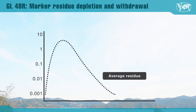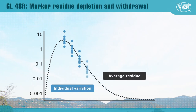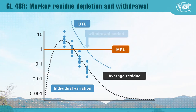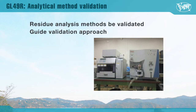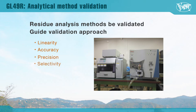This is an example of how the data may be used to determine a withdrawal period; however, this is outside the scope of the guidance. Residue depletion shows individual variations, with some animals showing more residue than average. For maximum residue estimation, a statistical approach is used to calculate UTL. Then the withdrawal period is determined at the time point when the UTL curve crosses the MRL level. The GL49R guide for the validation approach includes linearity from under the MRL level to the highest residue level, accuracy of recovery, precision, selectivity, limit of detection, limit of quantitation, residue stability in matrix and during processing, and robustness.